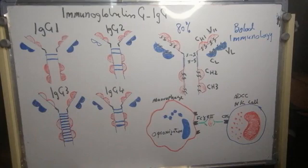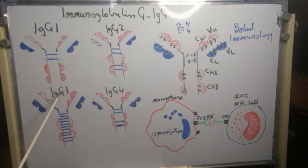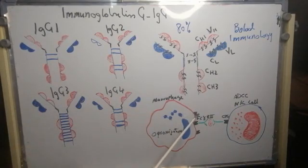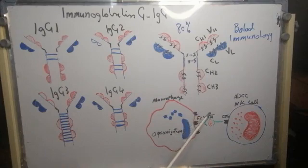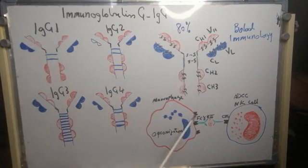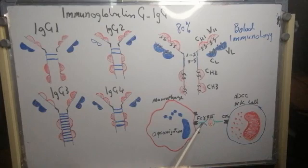Also, IgG1 and IgG3 have receptors on the surface of macrophages. As can be seen here, the Fc-gamma-RI receptor is specific for IgG1, and the Fc-gamma-RIII receptor is specific for IgG3.